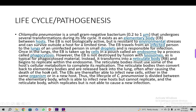Reticulate bodies are not directly infective to nearby cells; they must first convert back to elementary bodies. The reticulate body uses the host cellular metabolism to complete its replication — that is why these organisms are parasites. The reticulate body then converts back to elementary bodies and is released back into the lung, often after causing the death of the host cell, although apoptosis is delayed. Elementary bodies can then infect new cells in the same host or a new host.